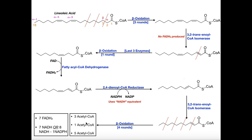When we have unsaturation in the fatty acid like we do here, our yield for NADH and FADH2 might change. For FADH2, remember we lost out on generating one. Normally for a saturated fatty acid, to find the number of FADH2s produced, we take the number of carbon atoms divided by two and subtract one — so 18 over two is nine, minus one is eight. However, we lost out on producing one here, so instead of eight we're only going to get seven FADH2.